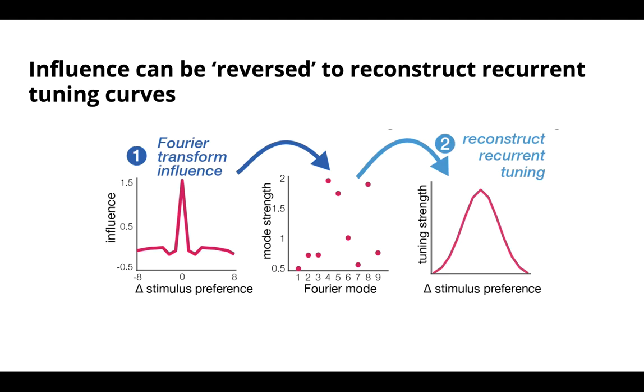Furthermore, we show that the influence of the perturbation measured in neural population activity can be reversed to reconstruct the recurrent tuning curves.